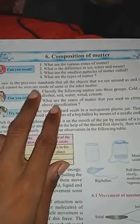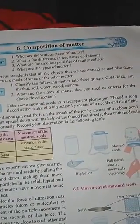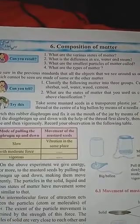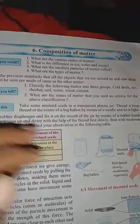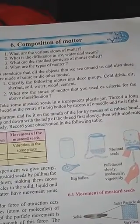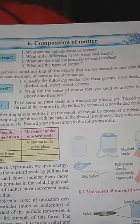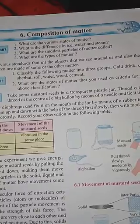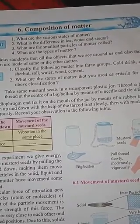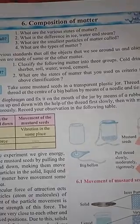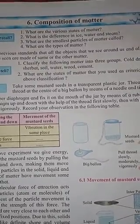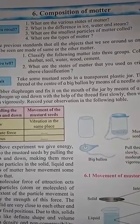All objects that we see around us, and also those which cannot be seen, are made of some or other matter. Now classify the following into three groups — solid, liquid, and gas. First group (solid): soil, wood, and cement. Second group (liquid): cold drink, sherbet, water. Third group (gas): air.